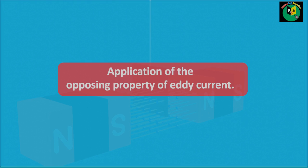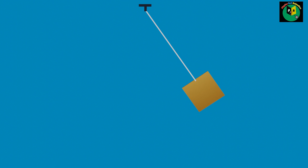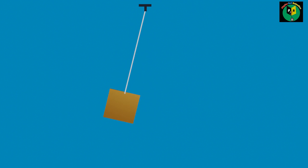To understand damping produced by Eddy Current, let's take a metallic plate connected to a string. The string is pivoted from one end and allowed to oscillate freely about its mean position.